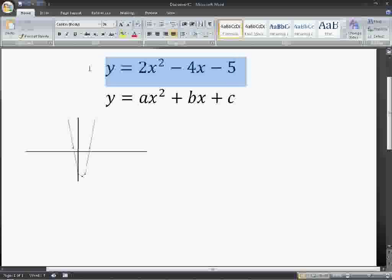We're going to use this formula right here, y equals 2x squared minus 4x minus 5. And we're going to solve it. It should look something like this. That's called a parabola, by the way.